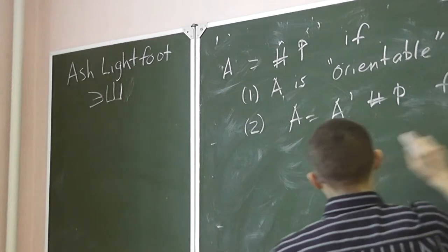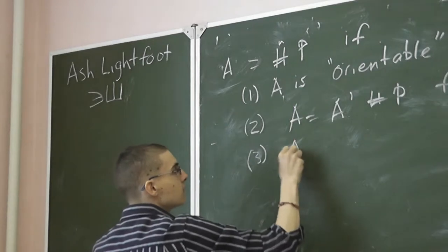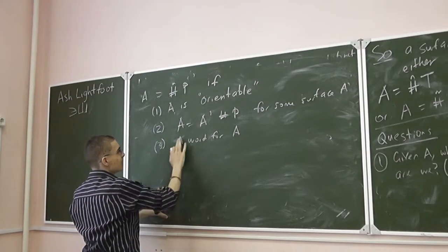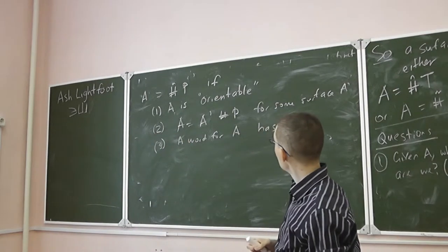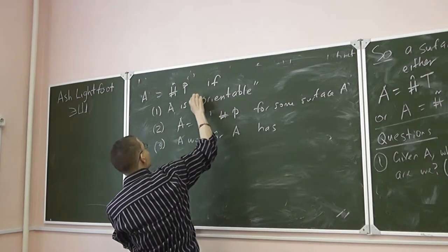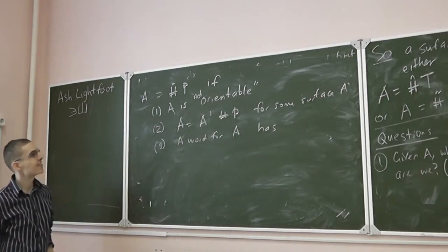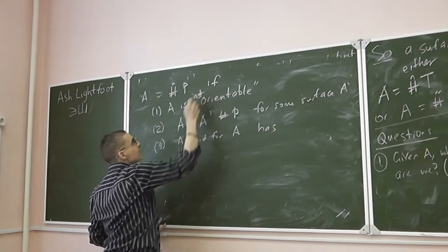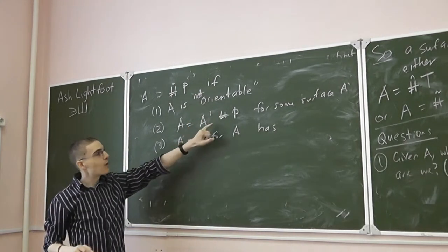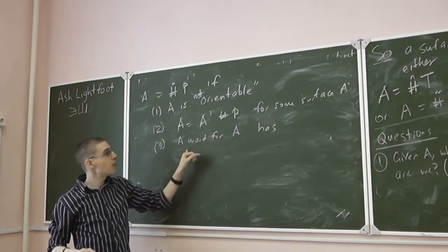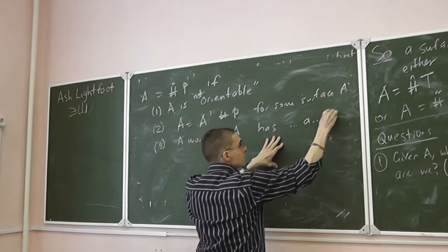Let's write another condition — another criterion. A word for A has A and then somewhere else an A — that is, the same letter appearing twice in the same direction. So A is not orientable when a word for A contains AA. Those watching at home: not orientable means the word for A contains a repeated letter in the same direction.